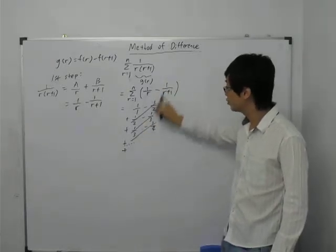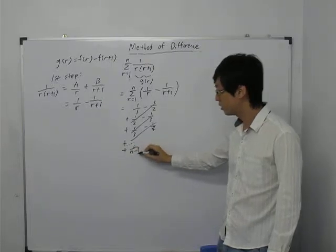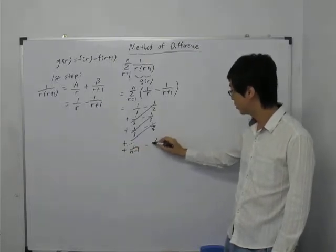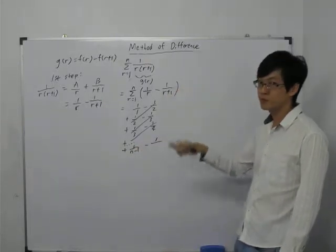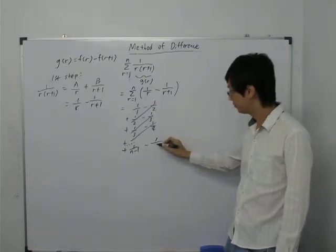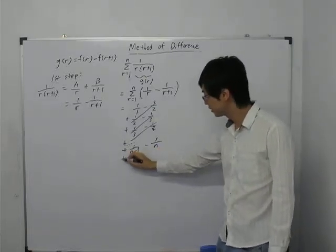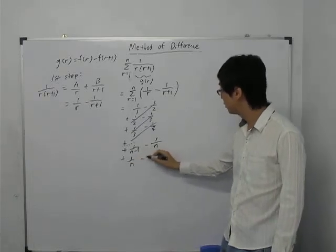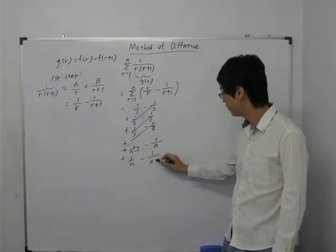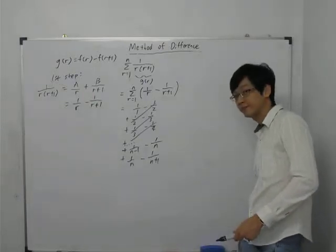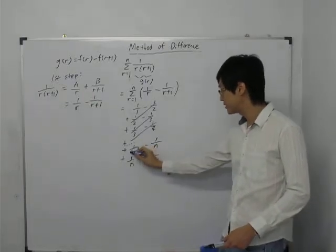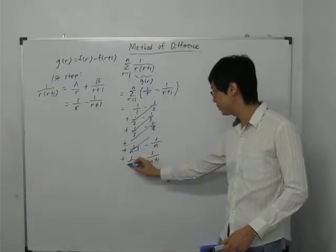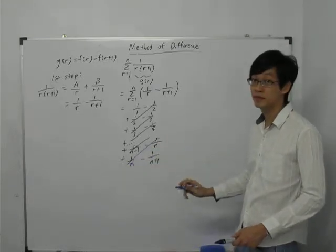So, the second last row will be 1 over n minus 1, minus 1 over n minus 1 plus 1, which gives you n. Followed by the last row, which is 1 over n minus 1 over n plus 1. And so, this term will cancel with the row above, and this term cancels with this term.